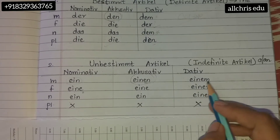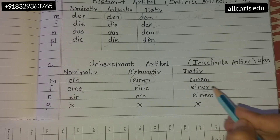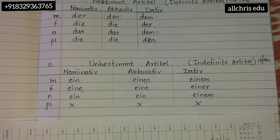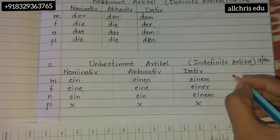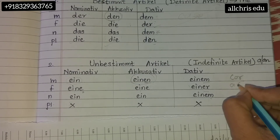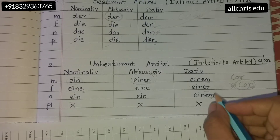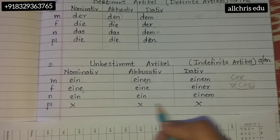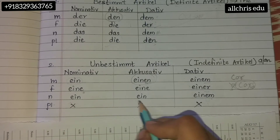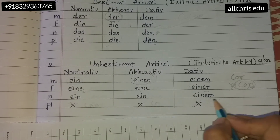In the dative column, the endings are dem, r, m, m — r, m. There are no plural forms in unbestimmter Artikel. Just like in English we say 'a car' but never 'a cars,' the indefinite article doesn't come with plural. So plural article is not written for unbestimmter Artikel — if a plural noun comes, no article is used.